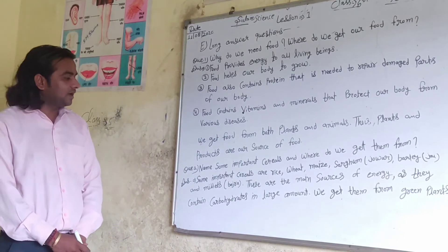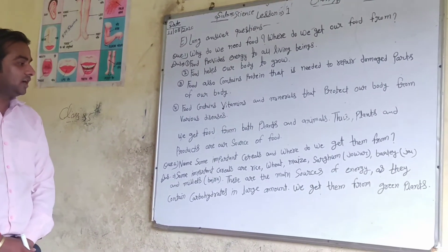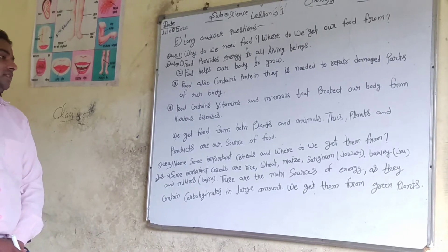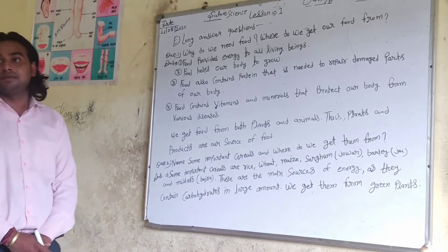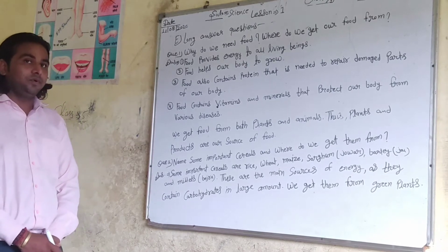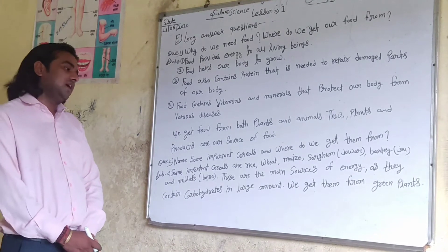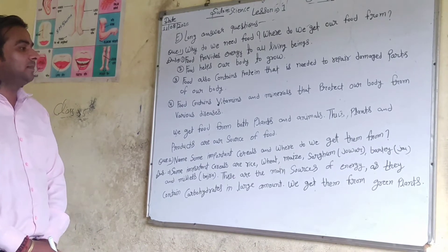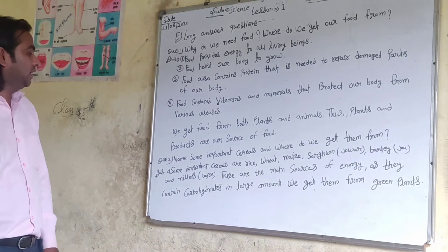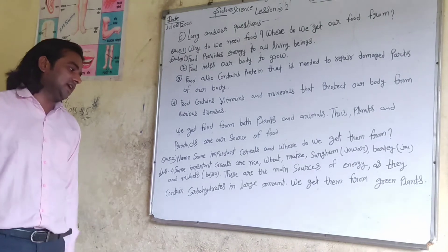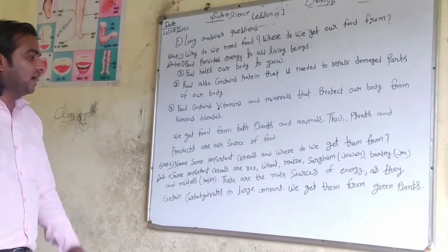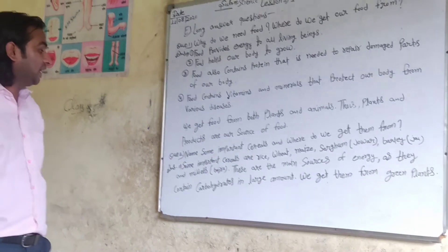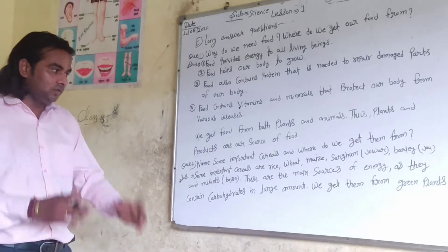Another question is: name some important cereals and where do we get them from? Some important cereals are rice, wheat, milk, sorghum, barley, jowar, millet, and bajra. These are the main source of energy and they contain carbohydrates in large amounts.